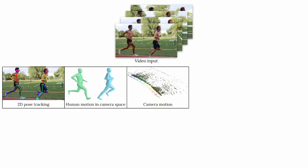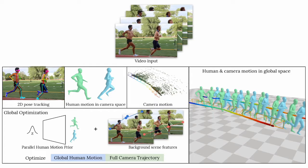Given a video with dynamic human and camera motions, we begin by obtaining initial 2D human pose, 3D human motion, and camera motions using off-the-shelf methods. We then use a unified optimization framework that optimizes the global human motions and full camera trajectories. Our framework leverages a human motion prior and performs latent optimization by optimizing the latent code of this motion prior.